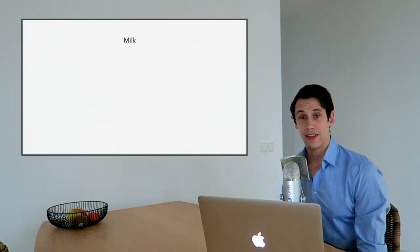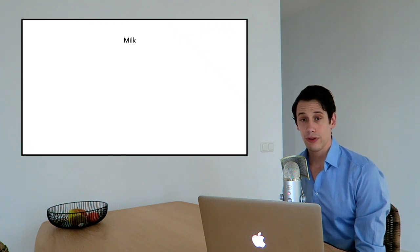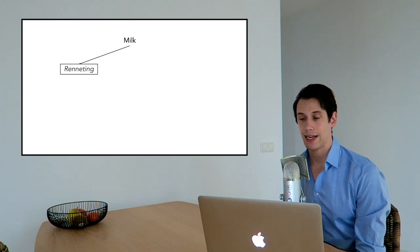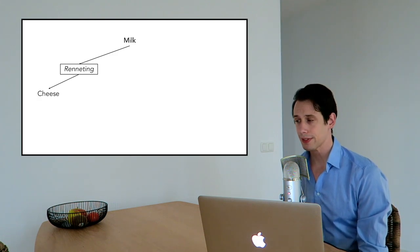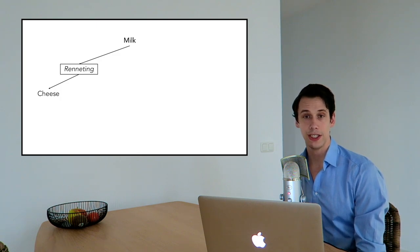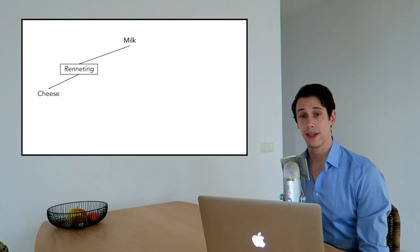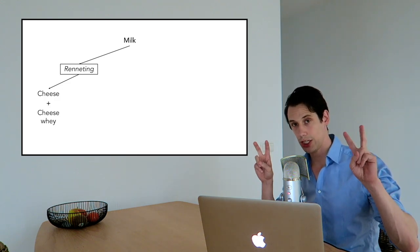Whey protein can be produced in different ways. For example, rennet can be added to milk and this will result in the production of cheese. And when you take that cheese, whey, what you're left with is fluids with proteins in it and those proteins are called cheese whey.